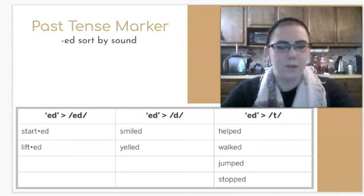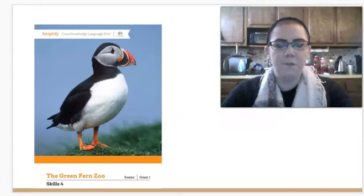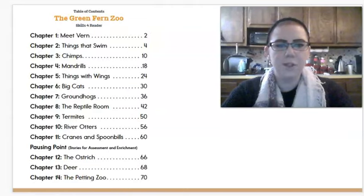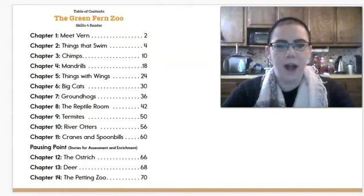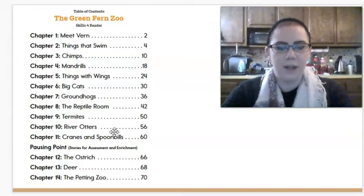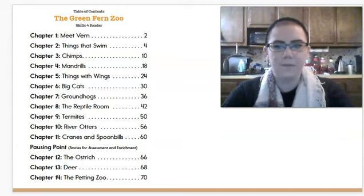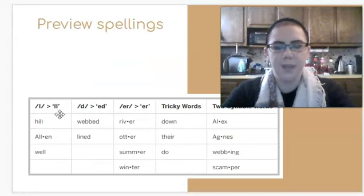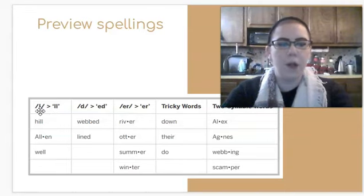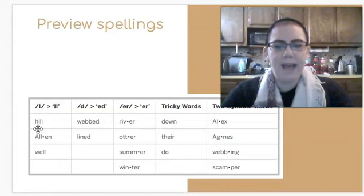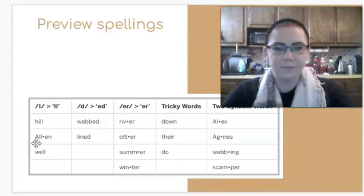Next, we've got a story to read in our Green Fern Zoo reader. Today's story is called River Otters. Chapter 10, River Otters is on page 56. Before we start, let's look at some words we're going to come across today. These all have the double L sound. Remember, when we see two of the same letter, we only hear it once. Hill, Allen, well.